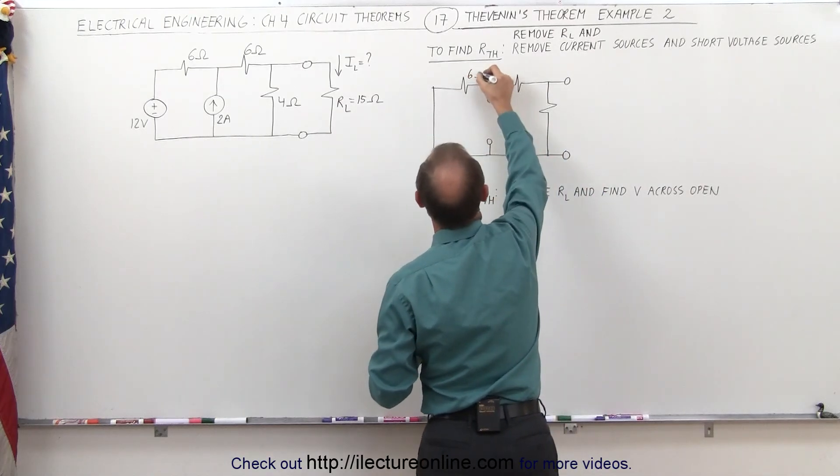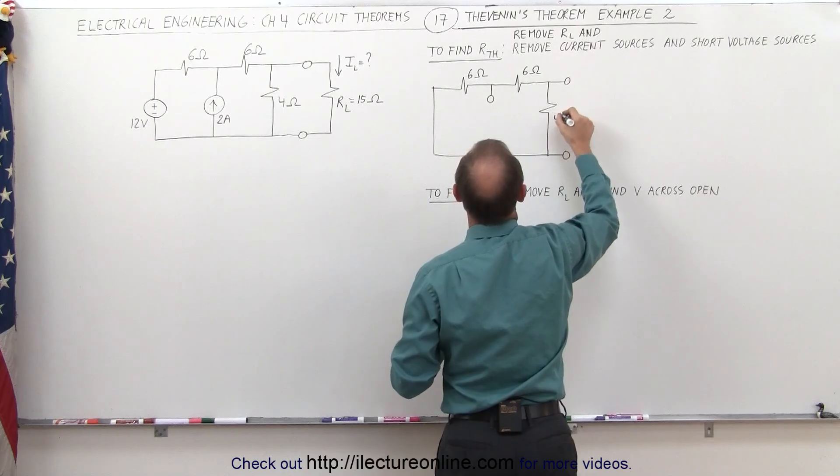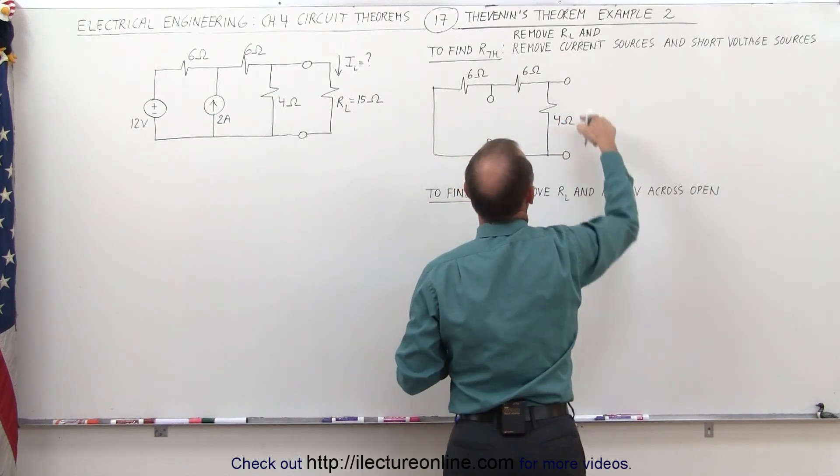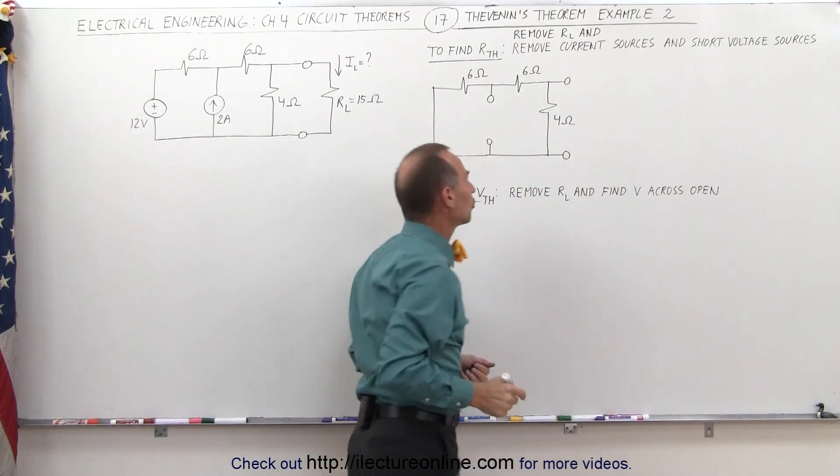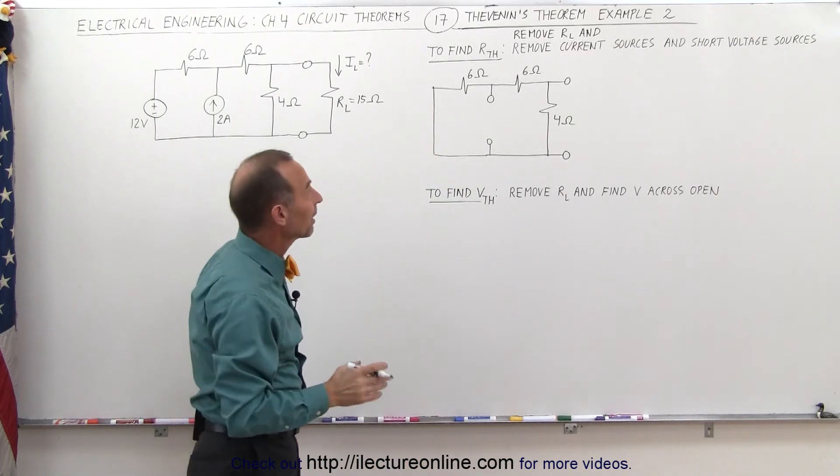This is 6 ohms, 6 ohms, and this is 4 ohms. And the resistance across the two ends of two terminals, that is equal to the Thevenin's resistance.